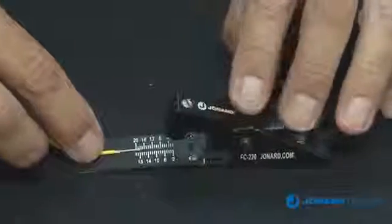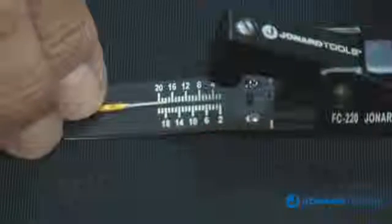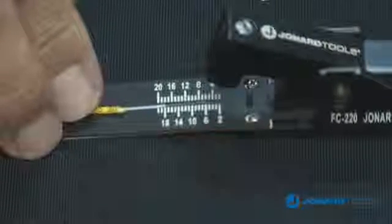Release the fiber holder lever to hold the fiber. Hold the buffered fiber against the leaf spring and gently press the fiber holding lever once more to relieve torsional stress.